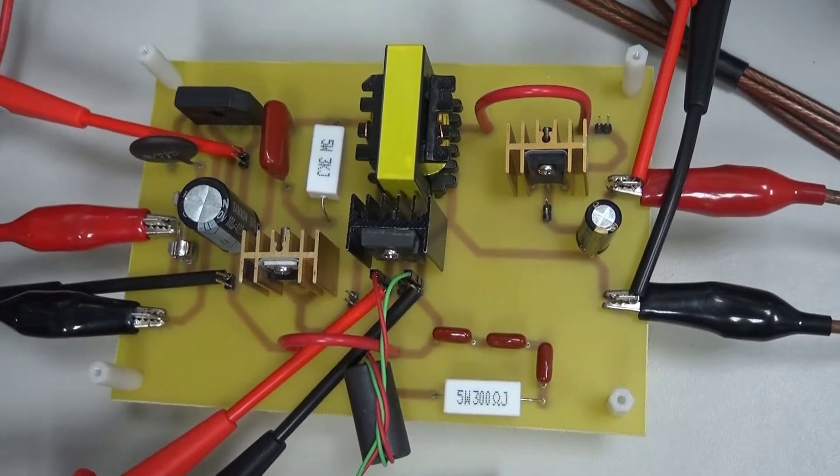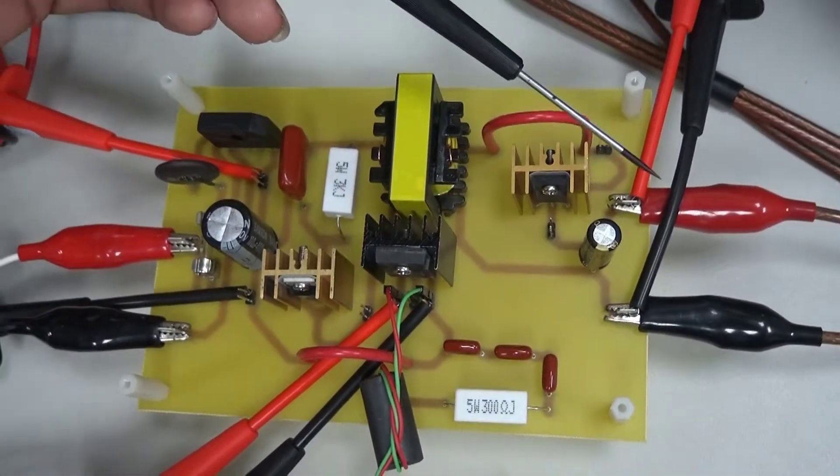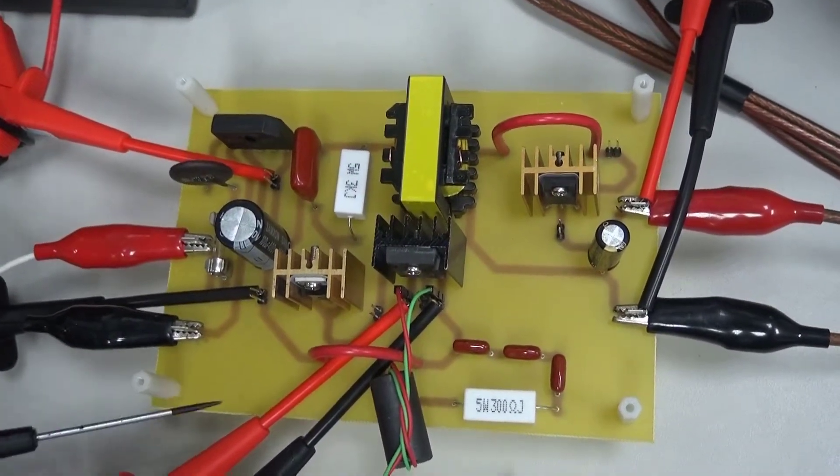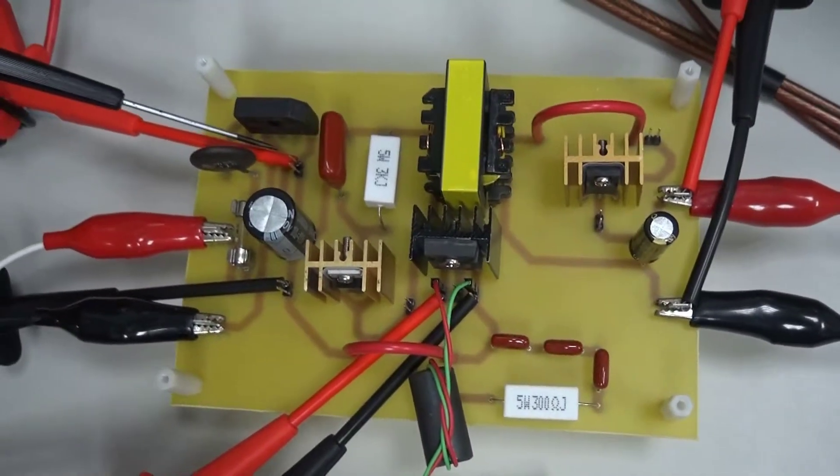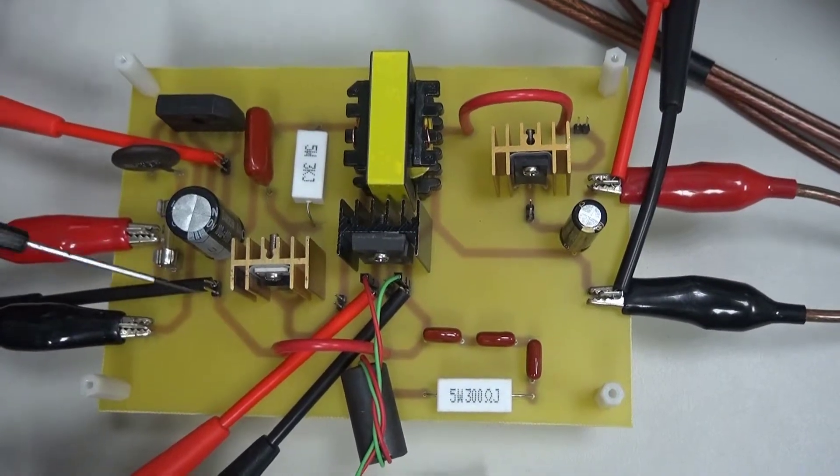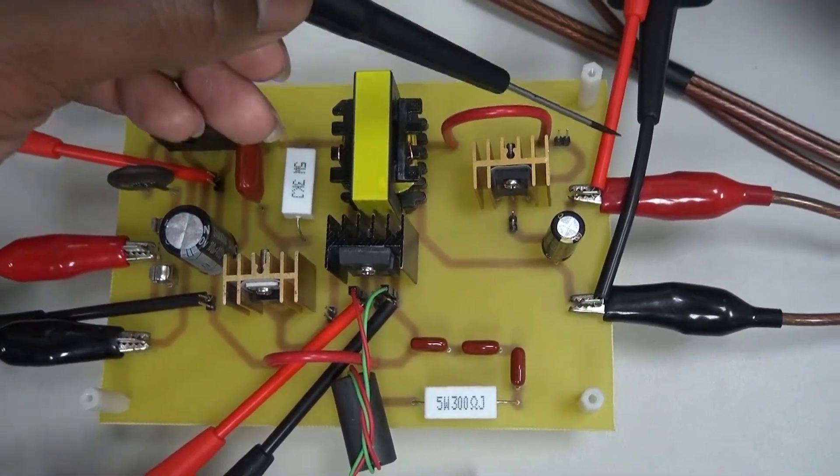Here we have our probes placed for the measurement of VIN, VOUT, and VGS. We are expecting 156VDC on the input here and we are expecting a 12V output over here.